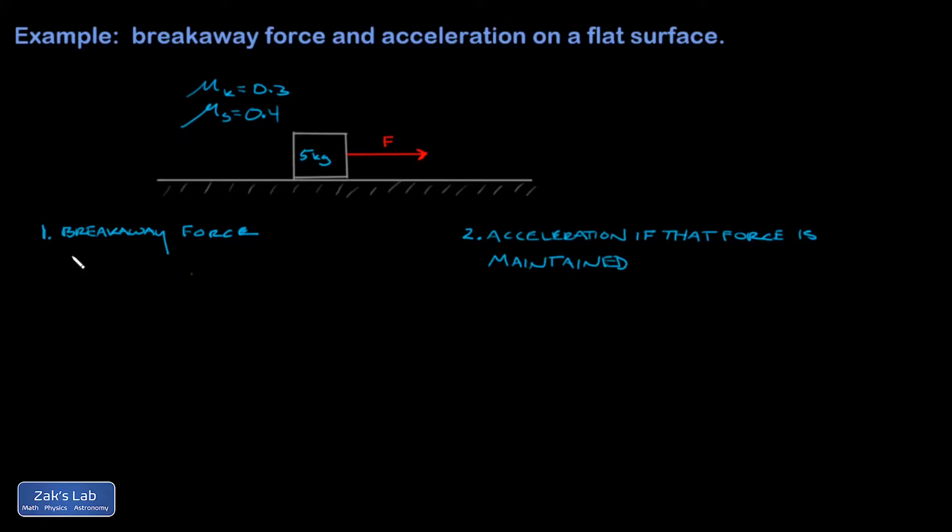So one of the keys to talking about any kind of breakaway phenomenon is that it means the static friction force is maxed out right before it gives up, right before you break loose. And we know that the maximum static friction force is related to the normal force, like this. So you have a static friction coefficient, 0.4 in this case, multiplied by the normal force. And what this is communicating is that the harder that object is pressed into the surface, the bigger the friction force can be, which I think makes a lot of intuitive sense.